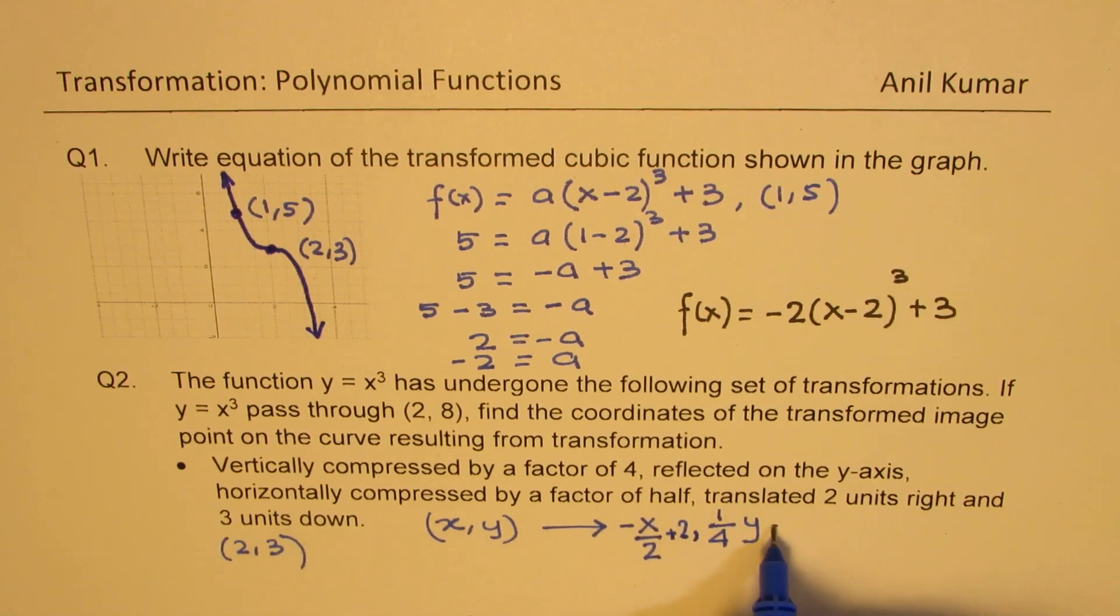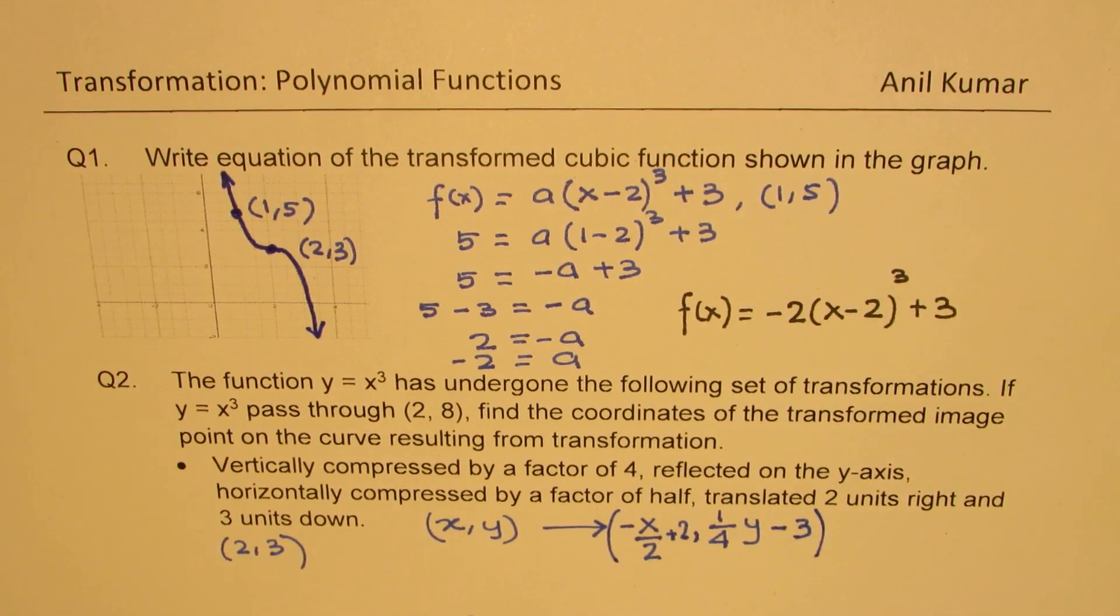And 3 units down, so, and 3 units down, y value will decrease by 3. So that becomes our general transformation of any coordinate on the curve of x cube, correct?